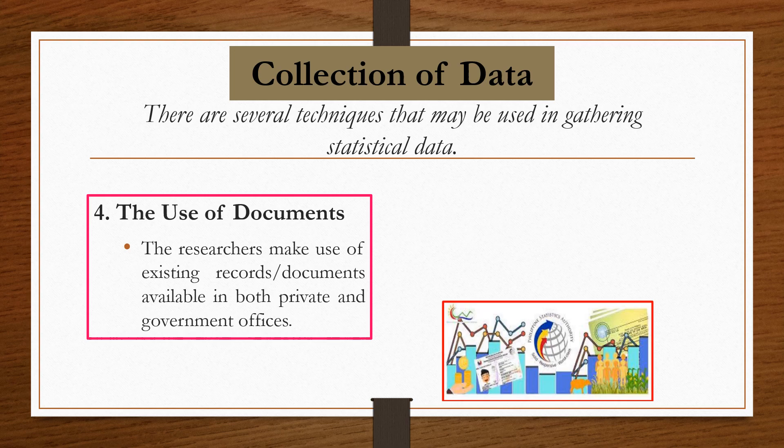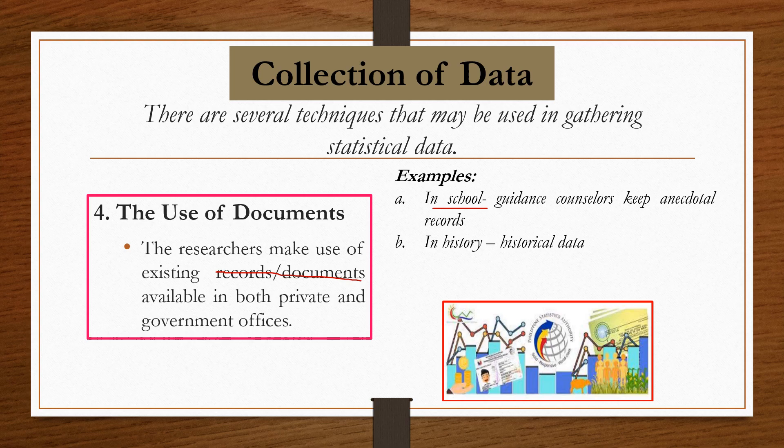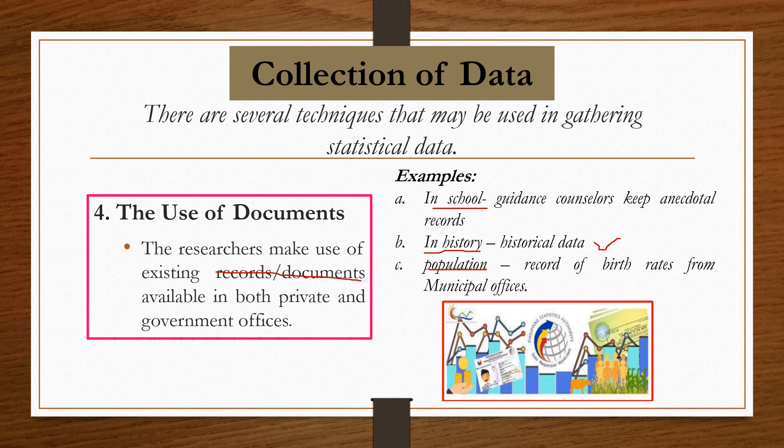Number four: we can also use documents to gather statistical data. The researchers make use of existing records or documents available in both private and government offices. For example, in school we can gather information from the guidance counselors who keep anecdotal records. Another one for history: we can base our data on historical data. And for the population, we can ask for the record of birth rates from the municipal offices or other sources. Those are some examples of collecting data by using documents.